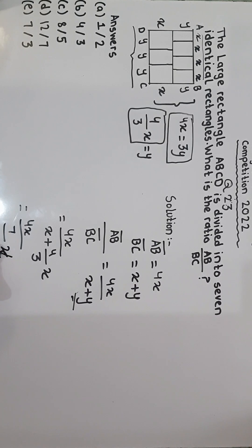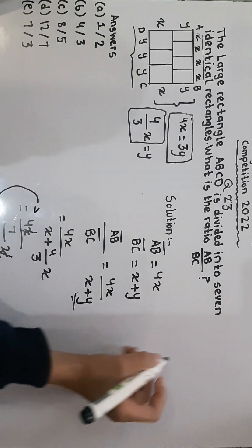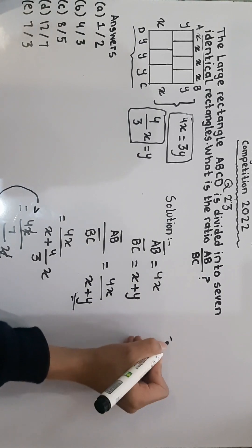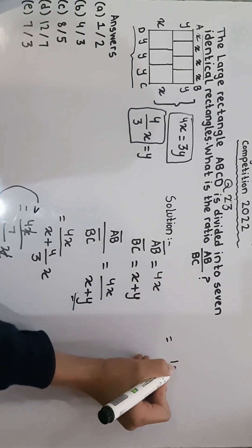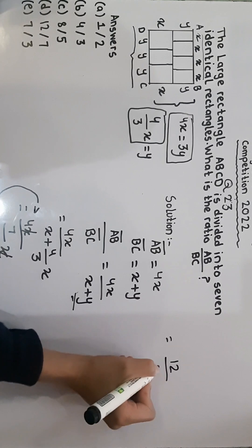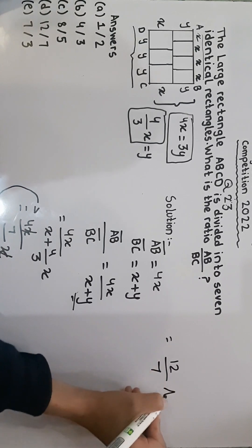We can cancel the X here. And you have studied in your previous class that if under fraction when more fraction comes, we have to divide this denominator from the numerator. So we will divide this from this. So 4X times 3, we will start from here, is equal to 12 divided by 7. And it is the required answer.